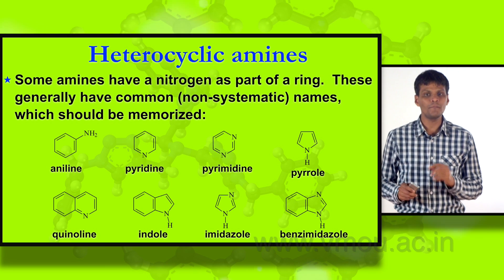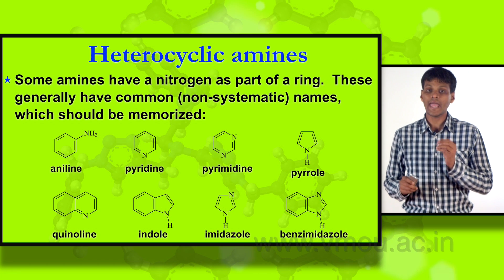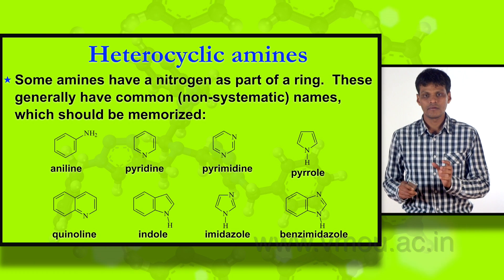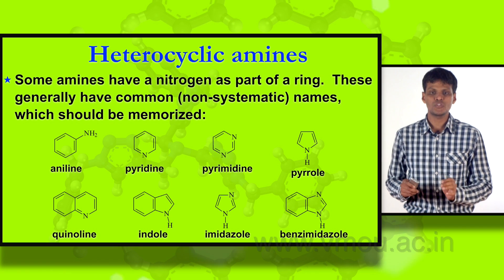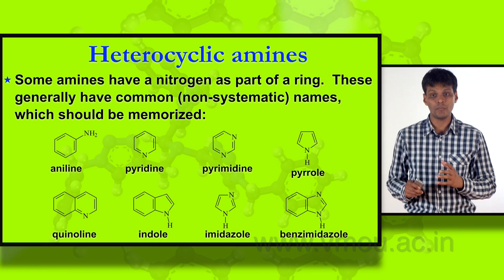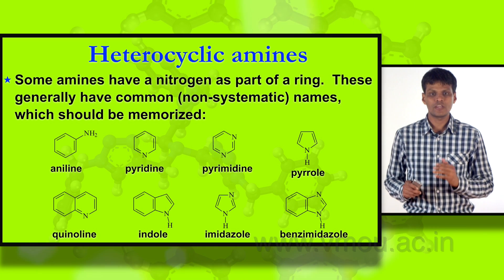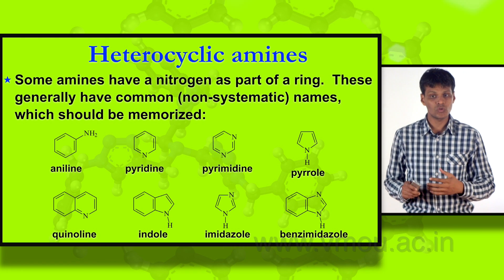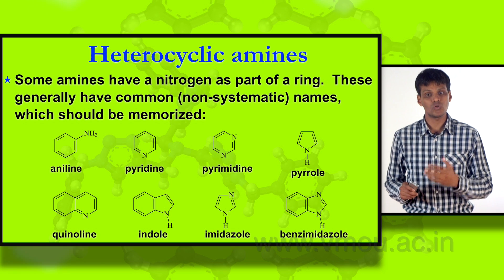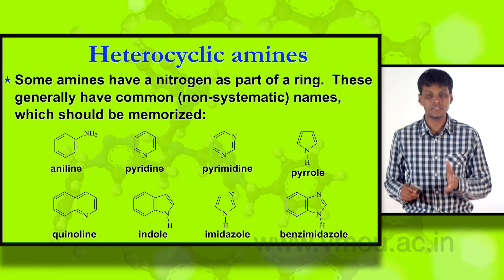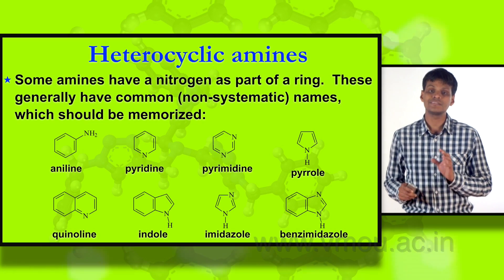Some very common examples of heterocyclic amines include aniline, which is the simplest form, with NH2 on the first position of the carbon ring. Other heterocyclic compounds include pyridine, pyrimidine, pyrrole, quinoline, indole, imidazole, and benzimidazole. These nitrogen and sulfur containing heterocyclic compounds have anti-cancer, anti-bacterial, and anti-fungal activity and are very useful for treating these diseases.